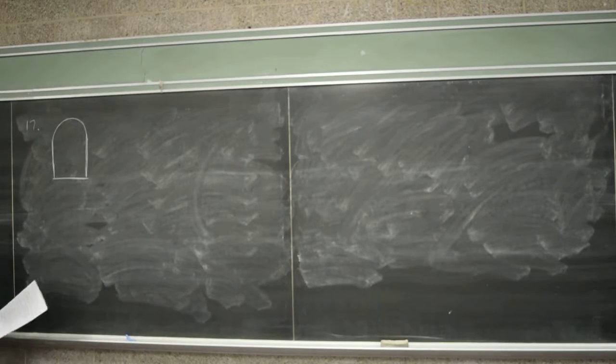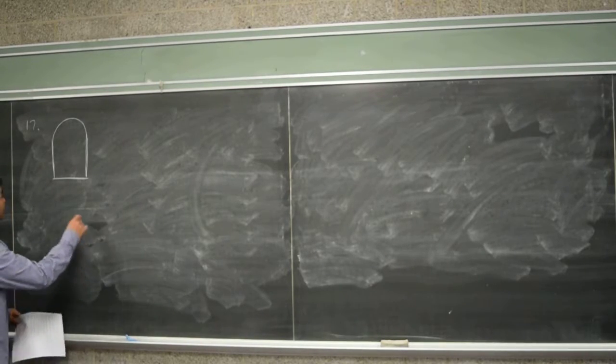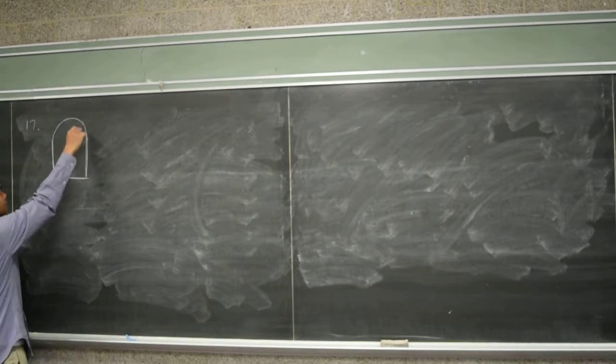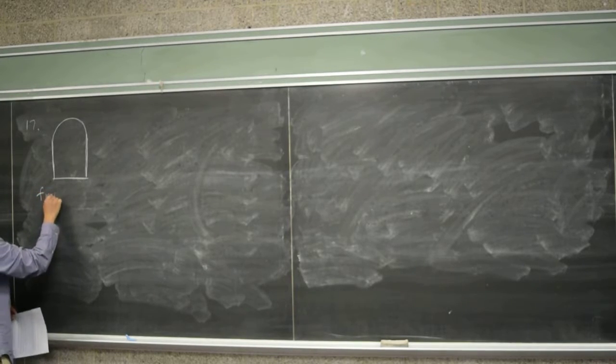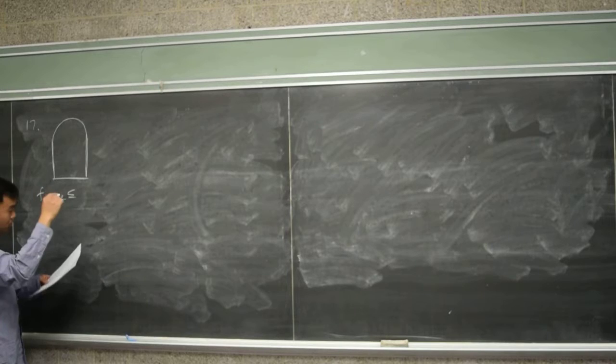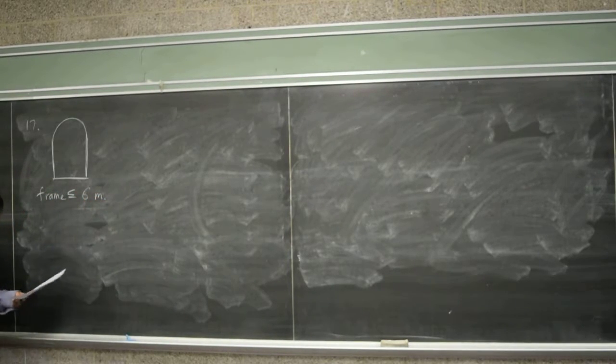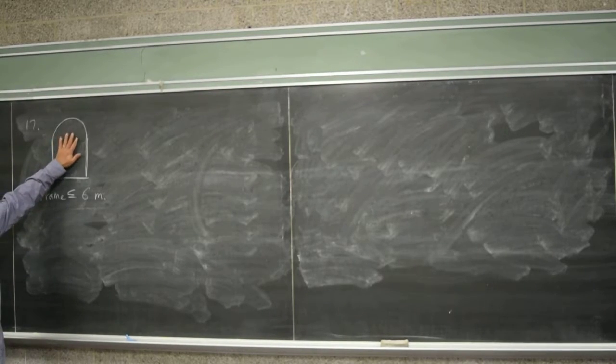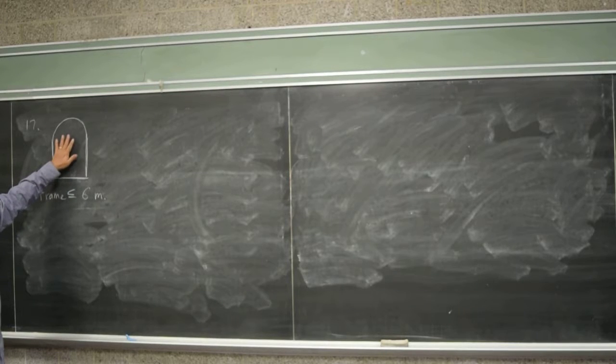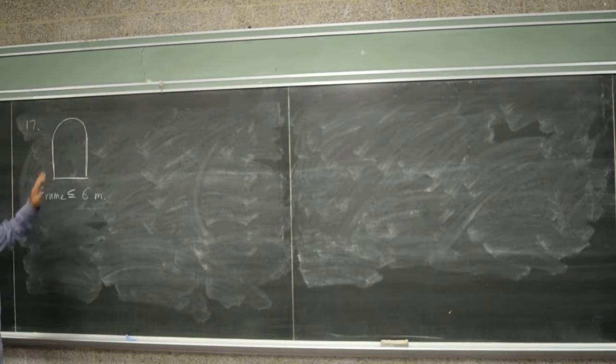Okay, so it says that the frame of this window cannot exceed a total of 6 meters. And then it asks us to figure out the dimensions of the window where the area of this window is the maximum. They want to have the maximum area of the window. So would the frame be the perimeter? Yeah, the frame will end up being the perimeter.